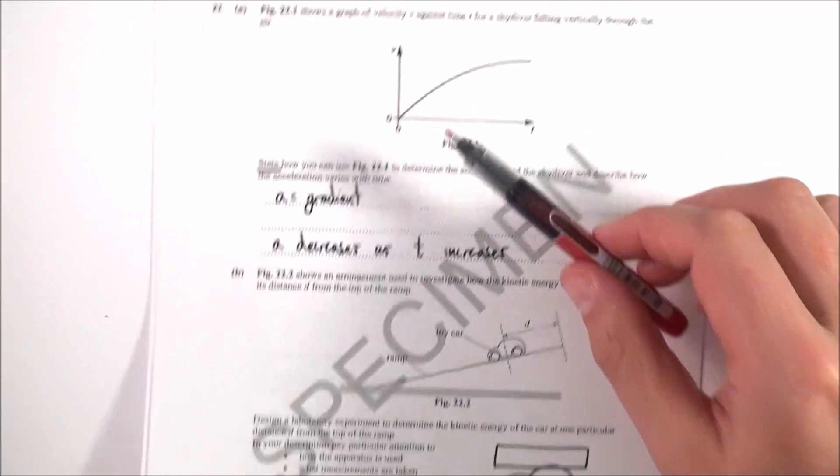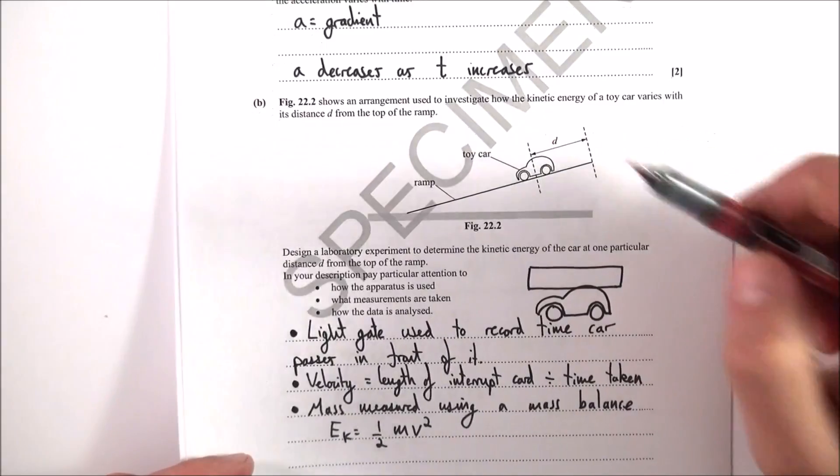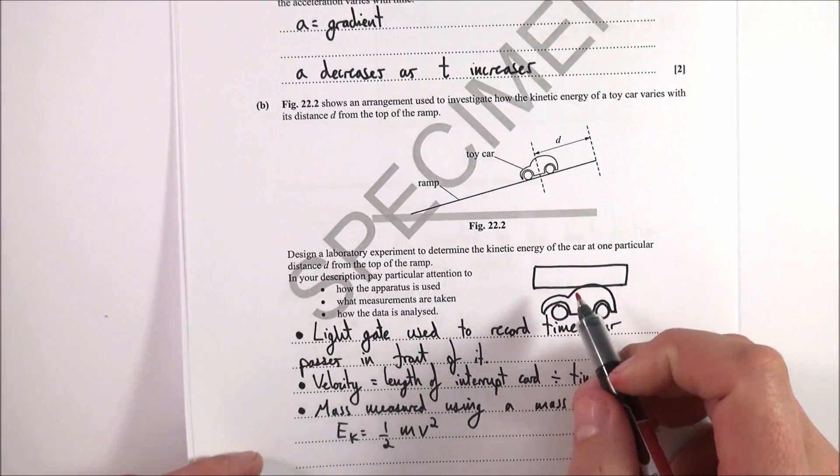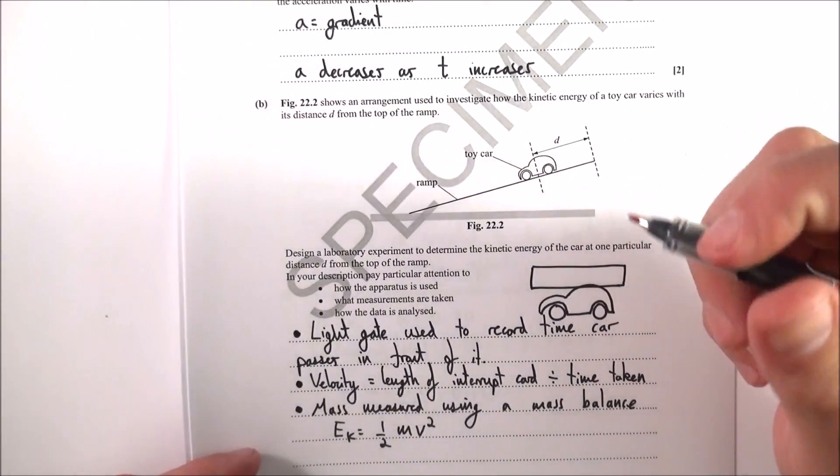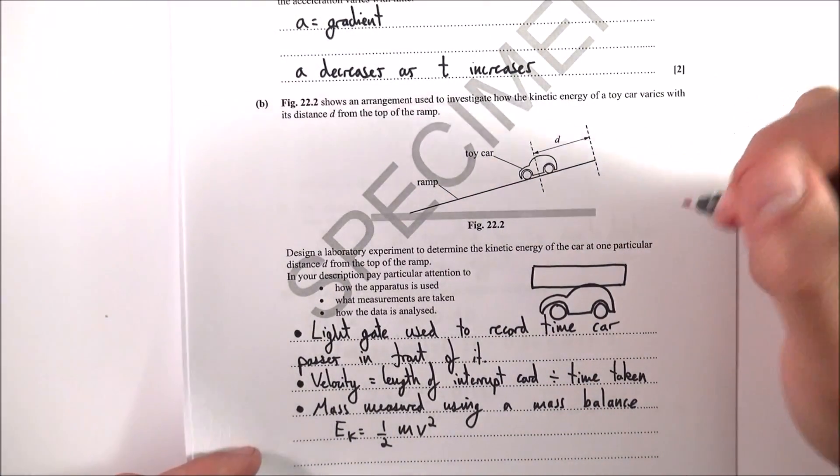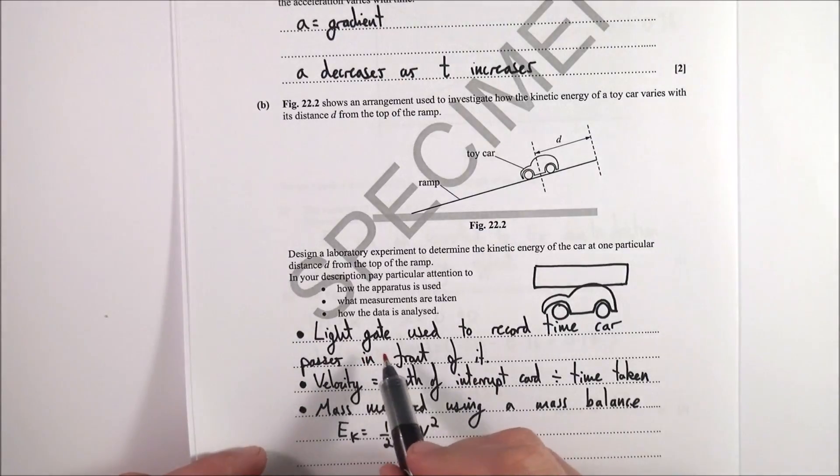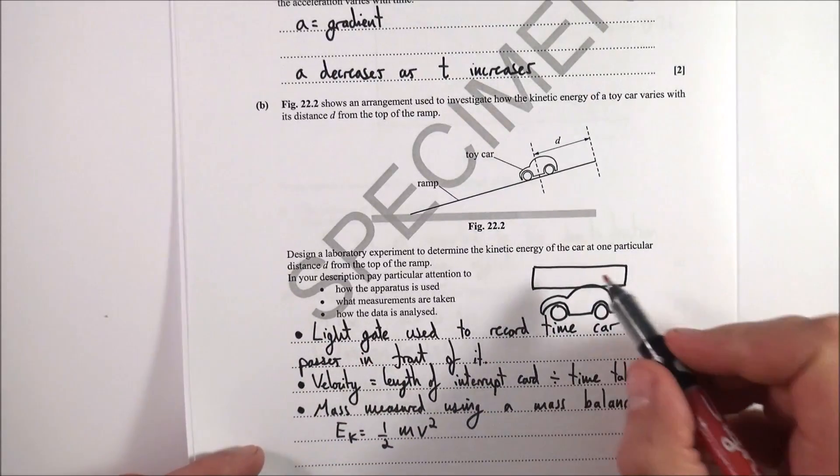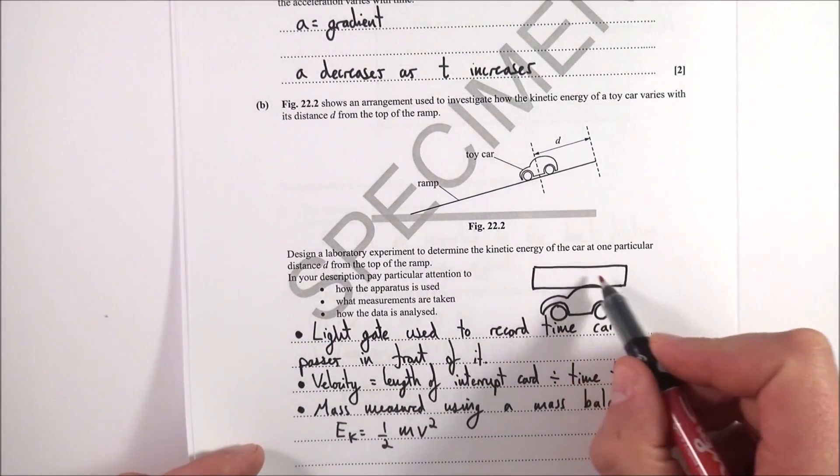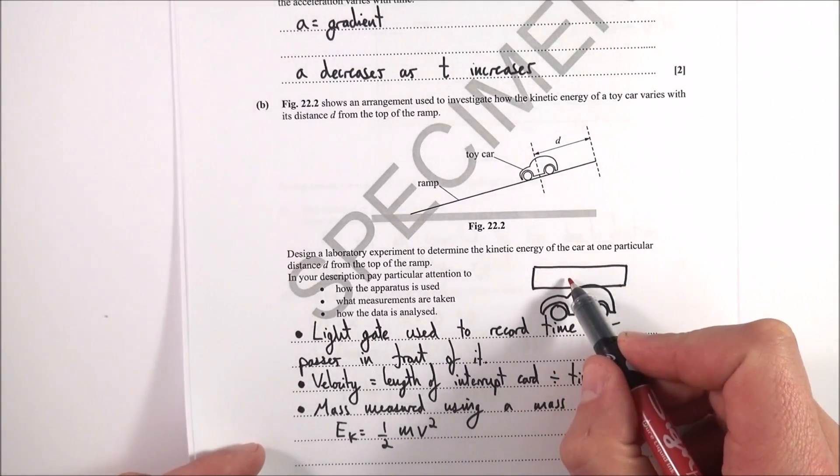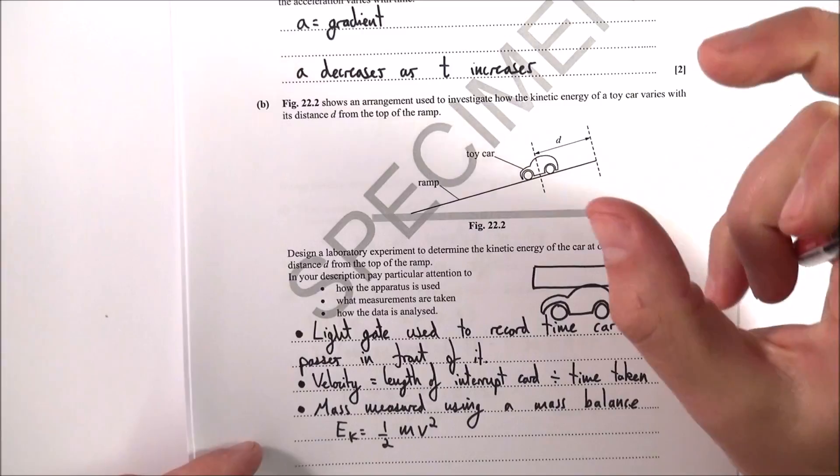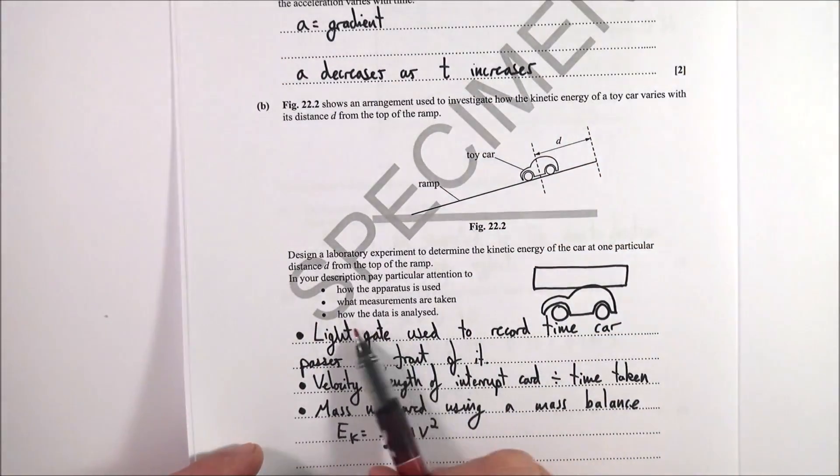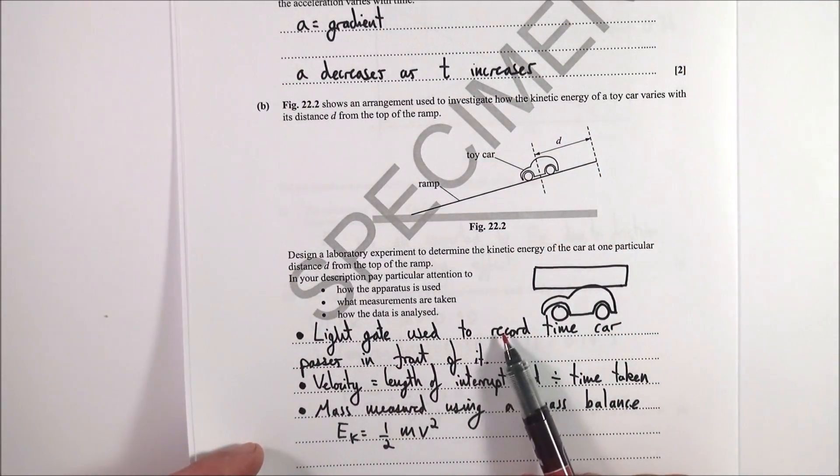The next question is very much a practical thing. How would you actually carry out the experiment? How could you find out its kinetic energy? You need to know two things: first of all, you need to know its mass, and you also need to know its velocity. So I've said that I'm going to use a light gate. What you have is basically a card that you can put on top of the car. This is called an interrupt card and this is going to basically interrupt the signal from a light gate. I basically said that a light gate is used to record the time that the car passes in front of it for one mark.